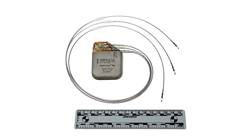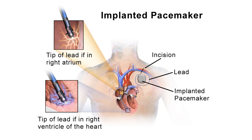Permanent pacemakers are used to treat various bradycardiac arrhythmias and are implanted during a brief surgical procedure, usually under local anesthesia. The electronic control center of the pacemaker is called the pulse generator, which is encased in titanium with a lithium iodide battery inside that lasts 5 to 12 years. The pulse generator is attached to one or more lead wires threaded through large blood vessels in the upper chest into the heart, with small electrodes at the ends of the leads attaching to the inner surface of the heart to pick up natural electrical signals and deliver the pacing pulse.